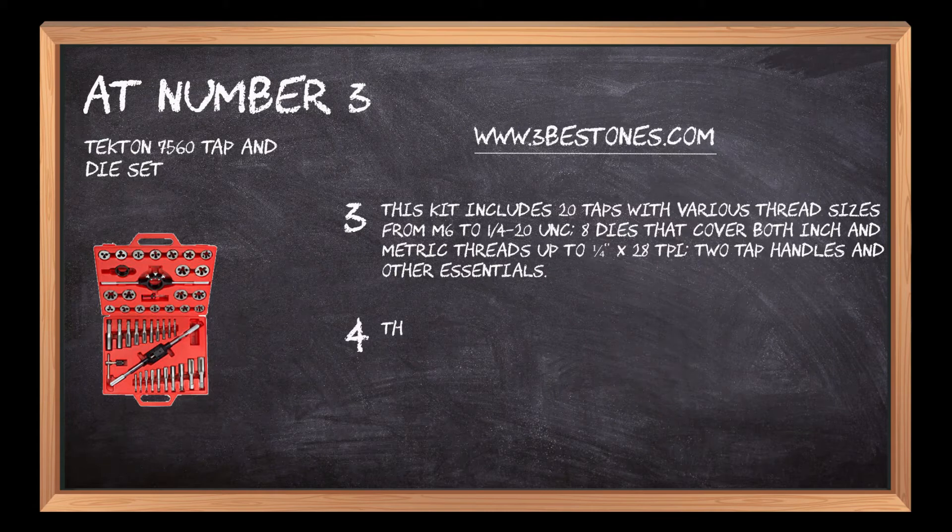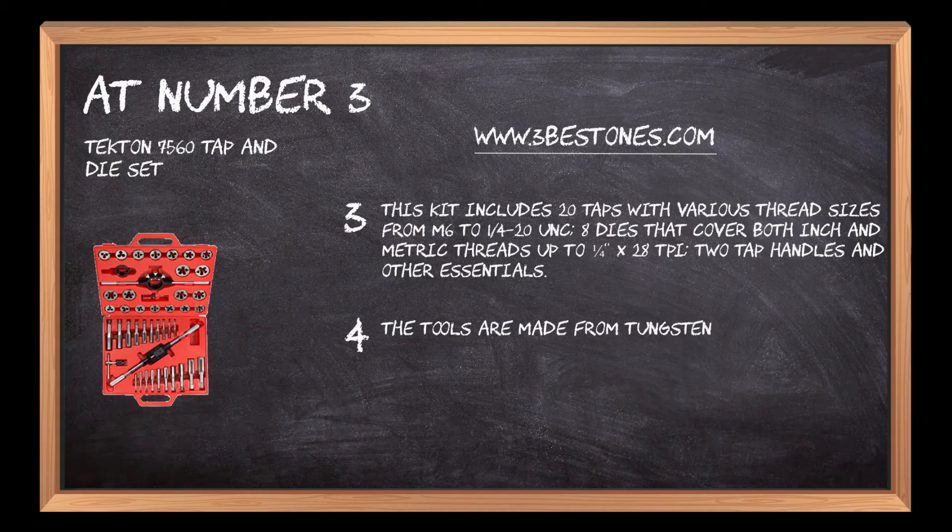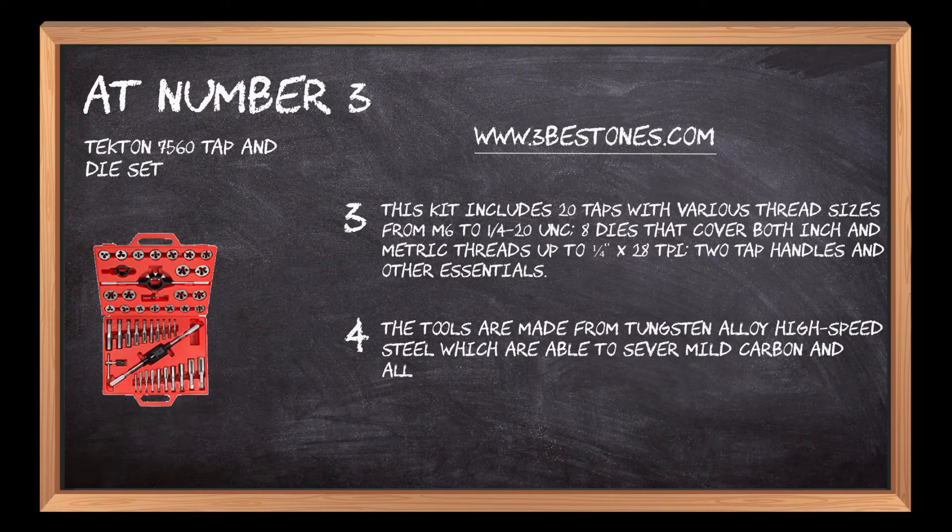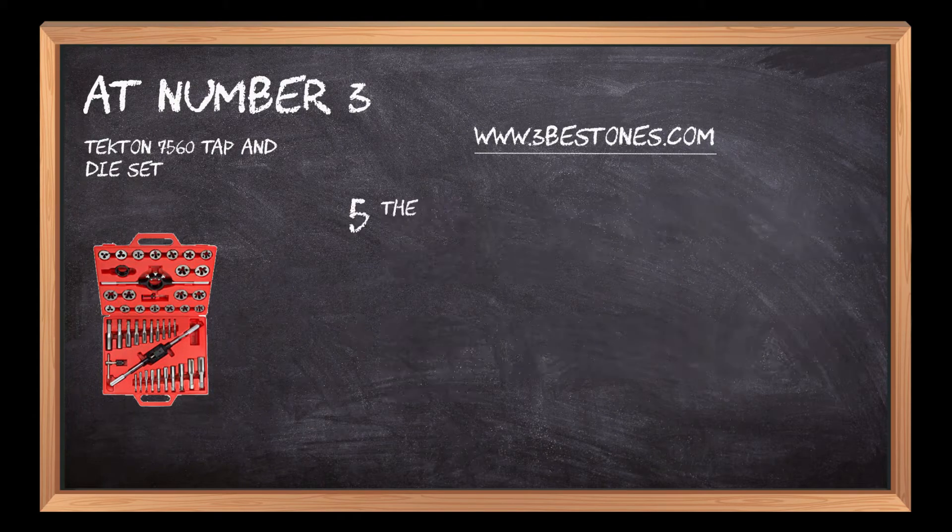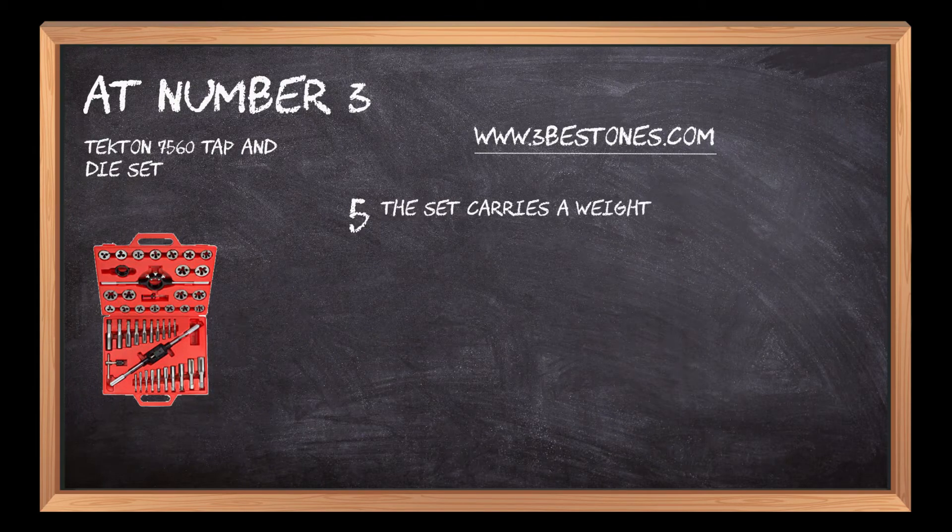The tools are made from tungsten alloy high-speed steel which are able to sever mild carbon and alloy steel, stainless steel, cast iron, brass, and aluminum. The set carries a weight of 13.2 pounds and its dimensions measure 14.5 by 16 by 2.75 inches.